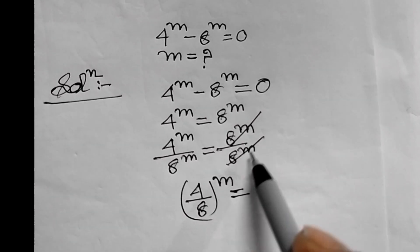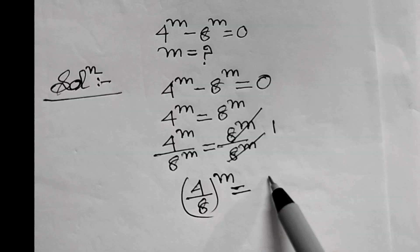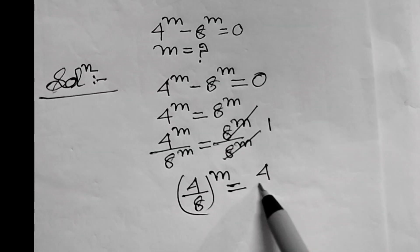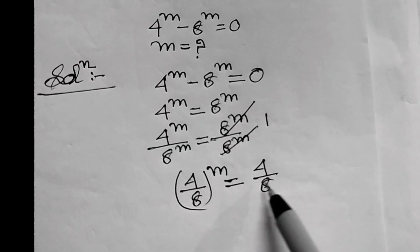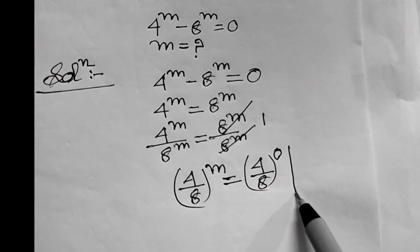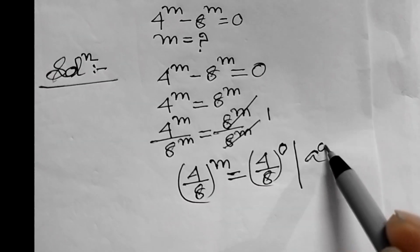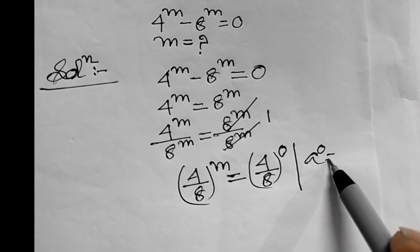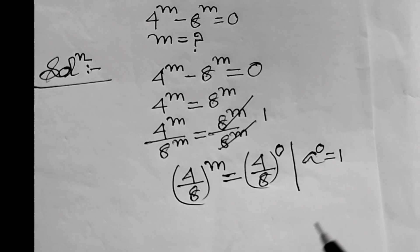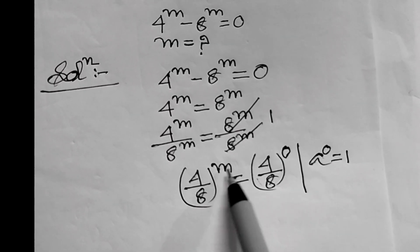We can write 1 as 4 upon 8 whole power 0. Here bases are equal, therefore powers will be equal.